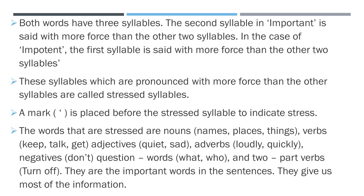For stressed syllables, a mark of vertical bar is placed before the stressed syllable to indicate stress. The words that are stressed are: nouns — names of persons, places, things; verbs — action words; adjectives — which qualify the nouns; adverbs — which add something to the verb; negatives — words like don't, can't, won't; question words — all WH questions: what, when, why; and two-part verbs like switch off, turn off. These are the important words in sentences and they give us most of the information.